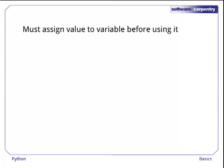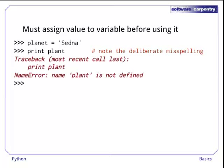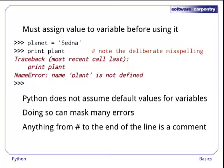Python is relaxed about the type of data assigned to variables, but it does insist that variables have values before they are used. For example, let's assign the string sedna to planet, and then try to print out the value of the variable plant without an e. Python immediately displays an error message because we haven't defined a value for anything called plant. It does not fill in some sort of default value for undefined variables, such as 0 or the empty string, because doing so can mask errors resulting from simple typing mistakes. Also, while we're here, notice Python's commenting convention. Anything from the hash character to the end of line is ignored, which allows programmers to add explanations or warnings to their programs.